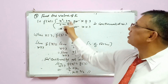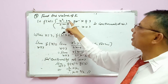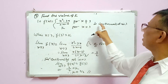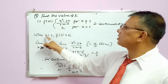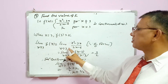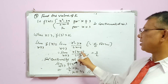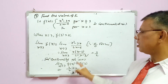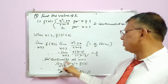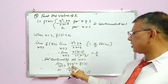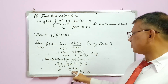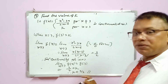Find the value of k if the given function is continuous. f(x) = (x² - 3x)/(2x - 6) for x ≠ 3, and f(3) = k, is continuous at x = 3. When x = 3, f(3) = k. Limit as x tends to 3: taking x common gives x(x - 3)/2(x - 3), cancel (x - 3), leaving x/2. Substituting x = 3 gives 3/2. For continuity, the limit must equal f(3), so k = 3/2.